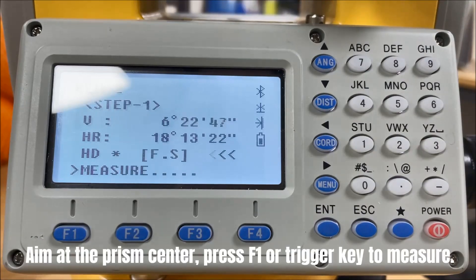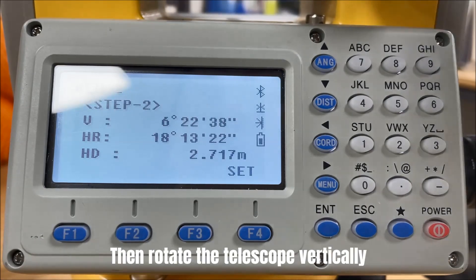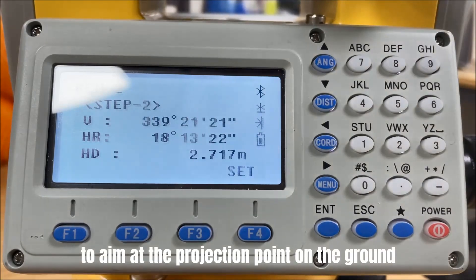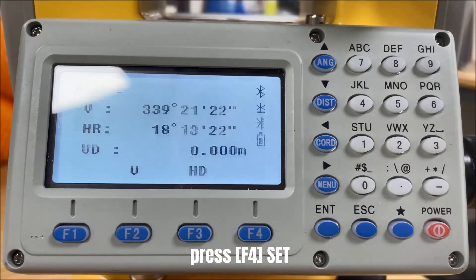Aim at the prism center and press F1 or trigger key to measure. Then rotate the telescope vertically to aim at the projection point on the ground. Then press F4 set.